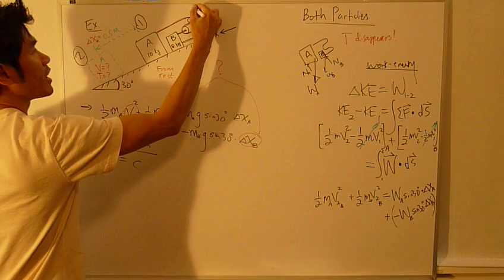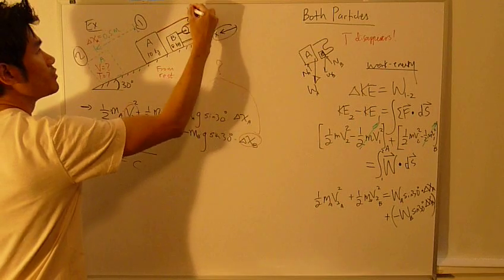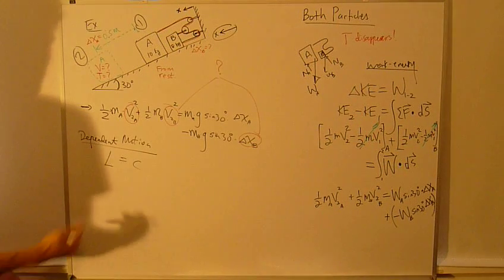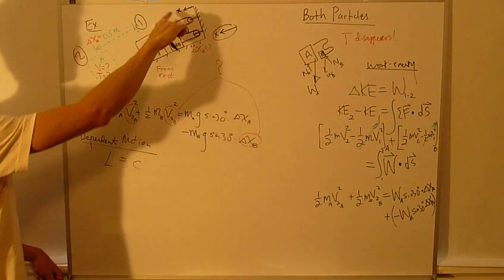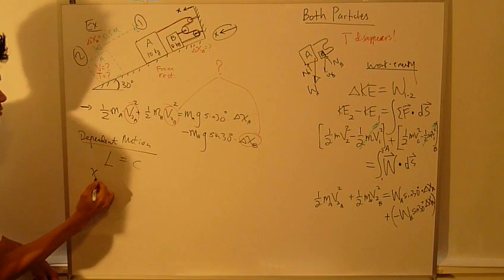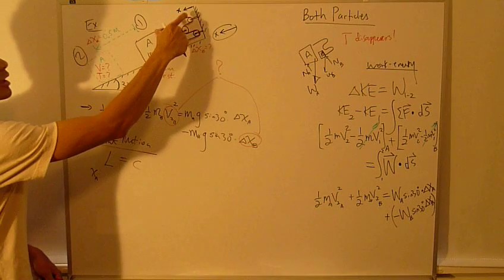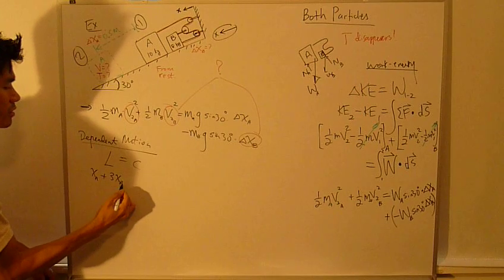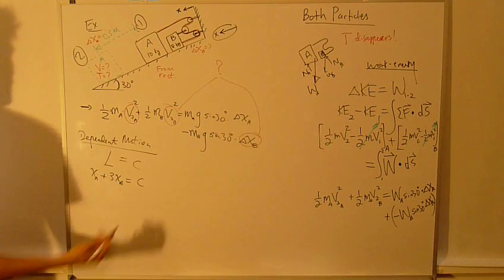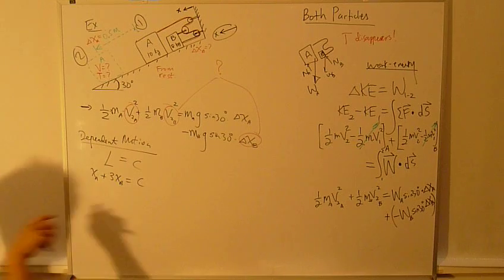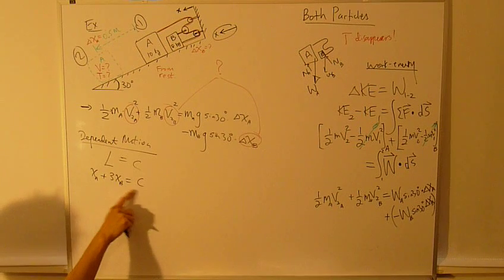And we're going to define, I'm going to move this up here. So my origin is on the wall. So cord length, this section is my XA, and then these three sections here is my XB, equals constant. Now XA plus 3XB equals constant.